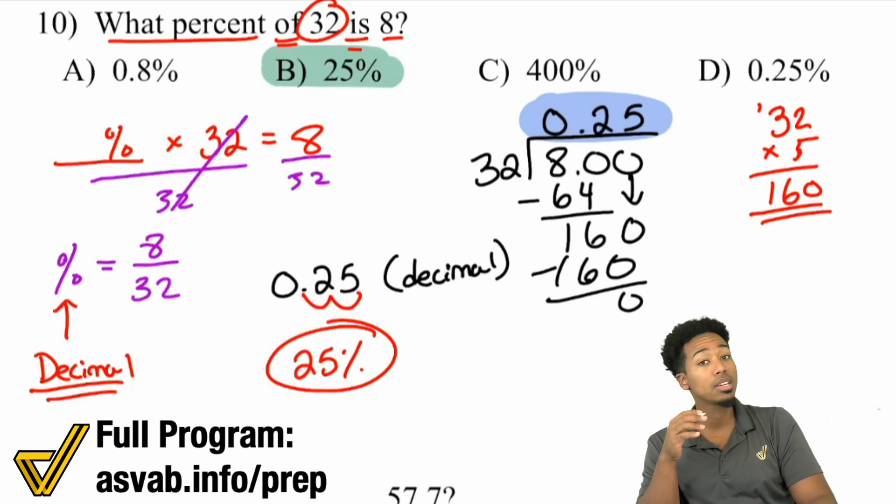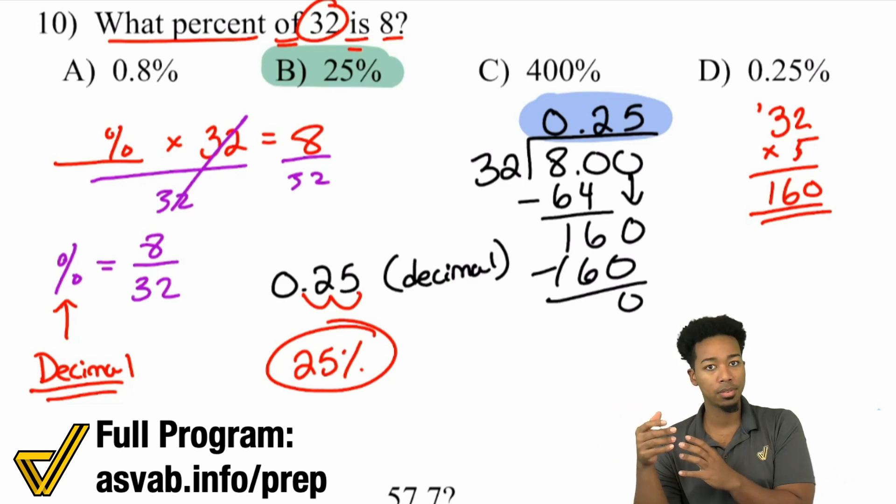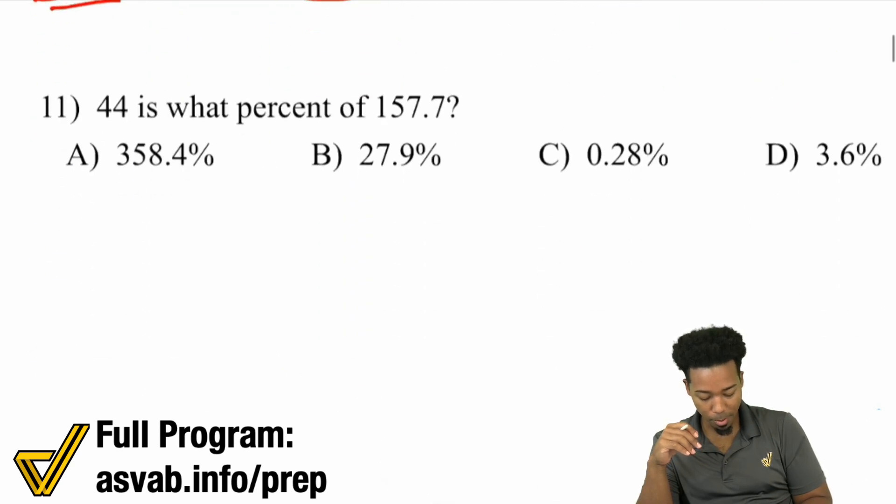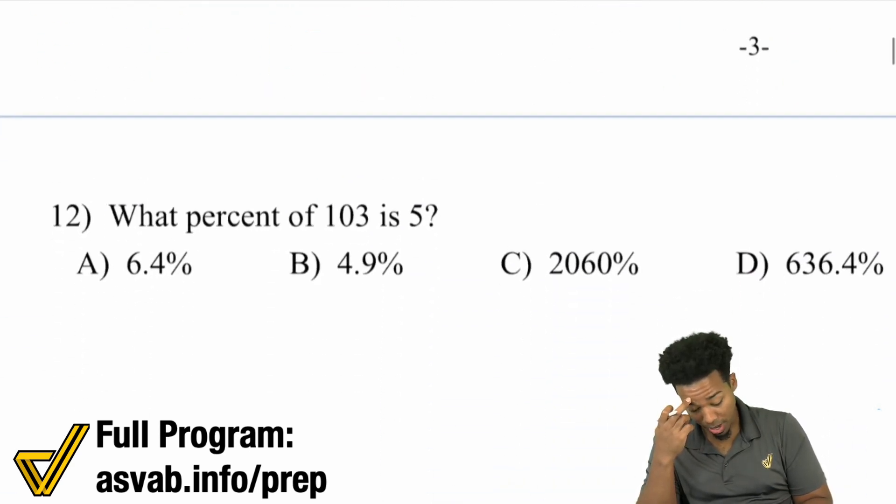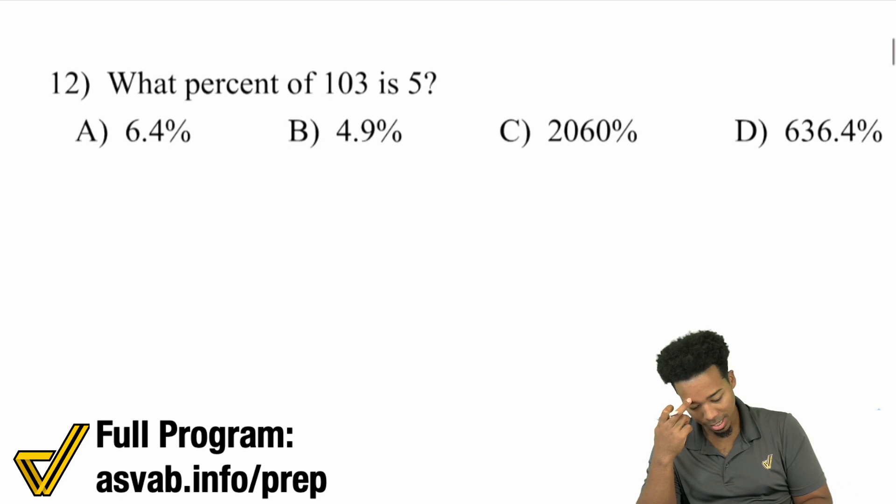Really, the big key here is this: we need to make sure we understand that when we calculate this stuff, we're going to get the decimal version. Then to turn it back into a percent, multiply by 100 or just move that decimal place to the right two times. Let's keep checking it out. Let's do one with less decimals - what percent of 103 is 5?